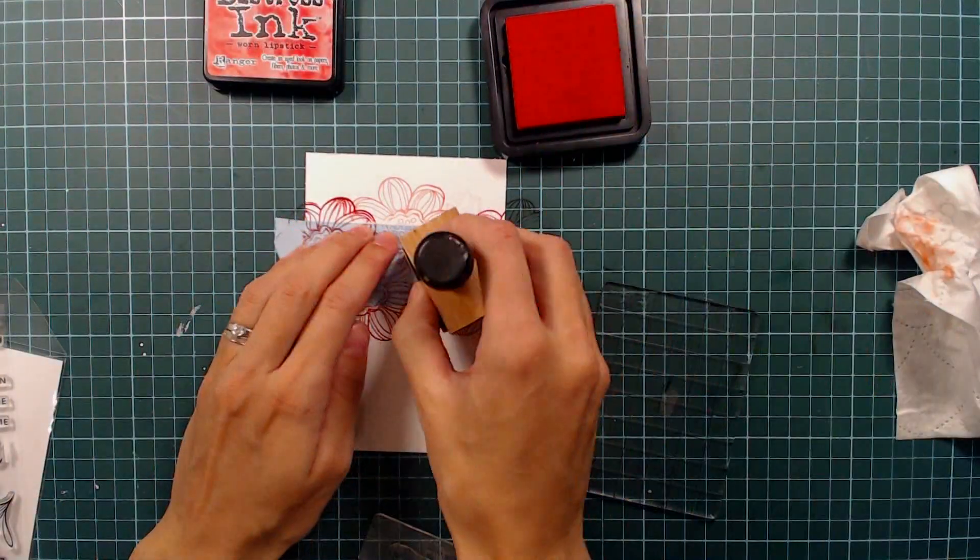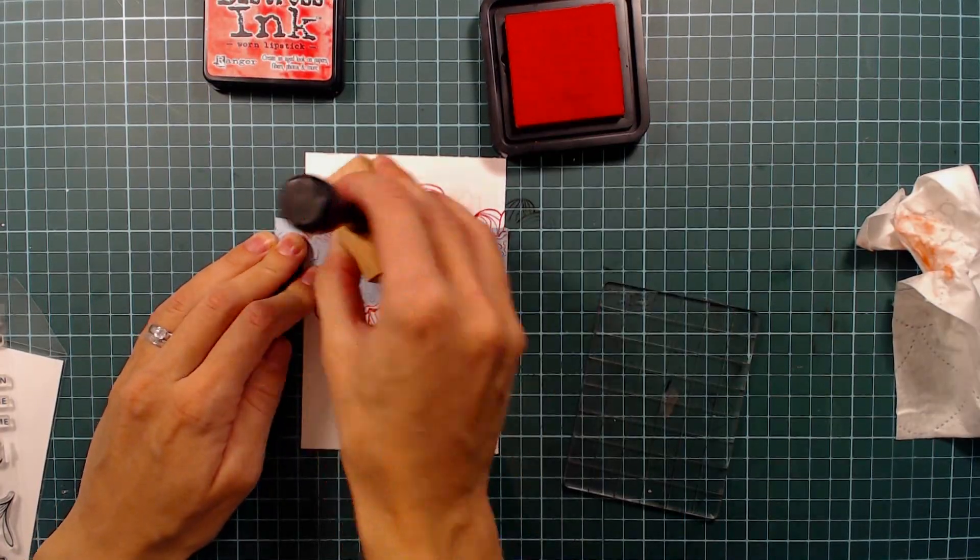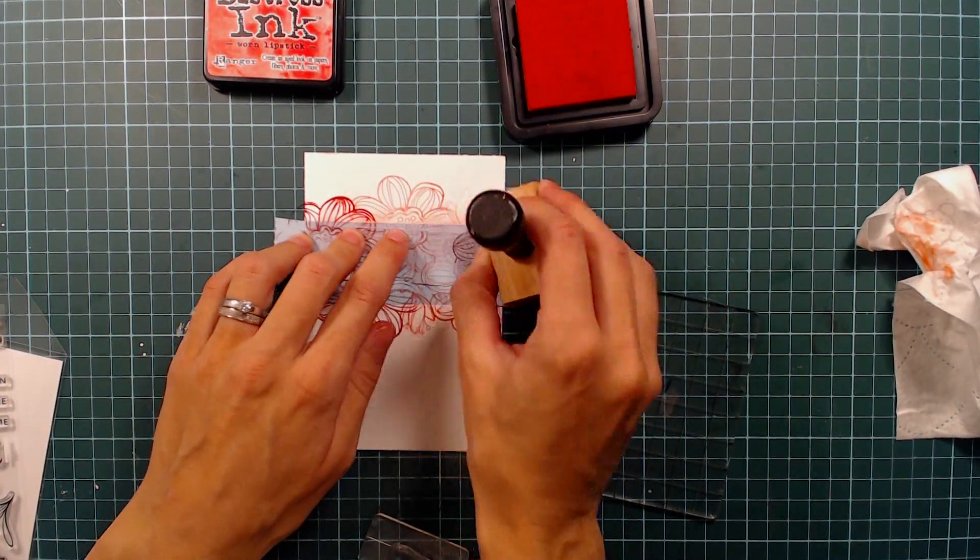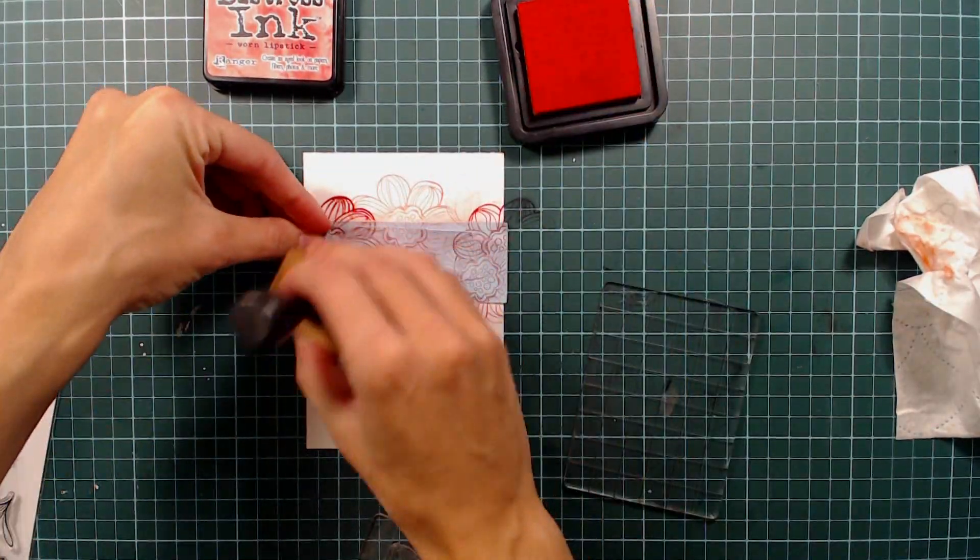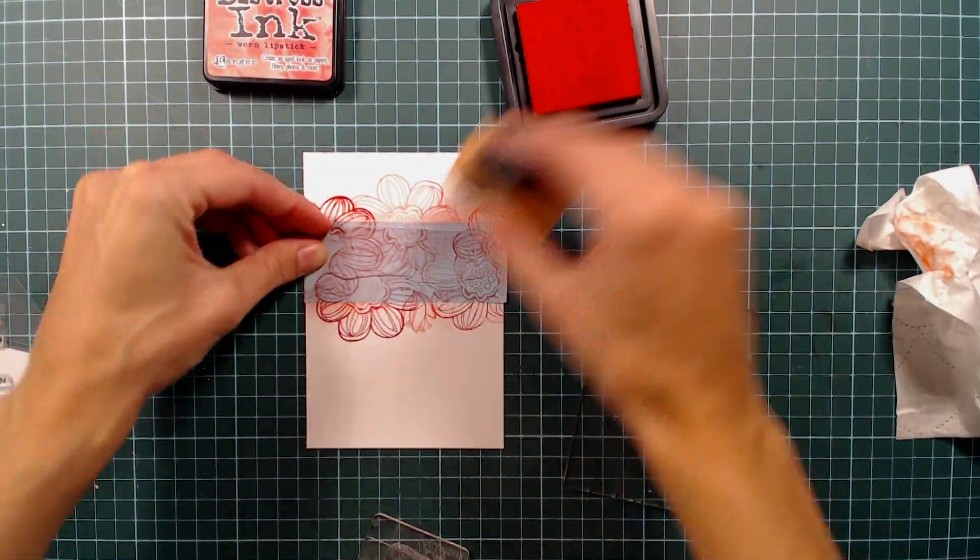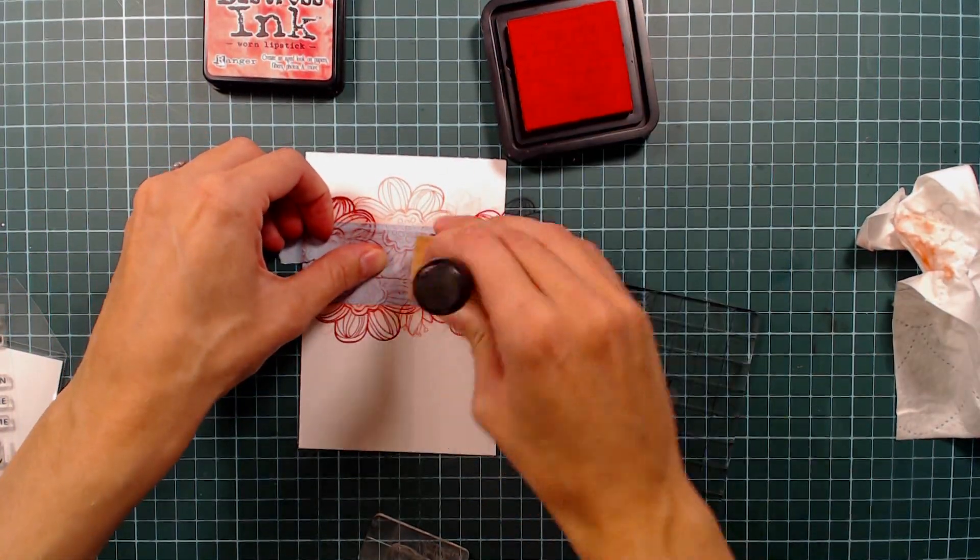To make the white look like it's standing out, I'm using my ink blending tool and the distress inks to do some shading around the edges. This way I get a nice and sharp edge that will really make the white part look like it's popped up from the background.